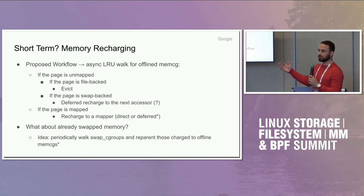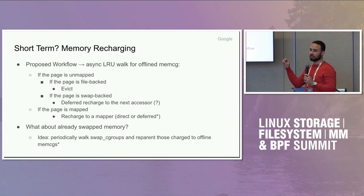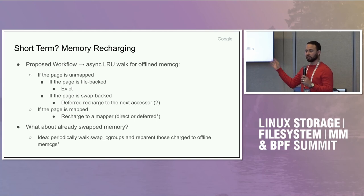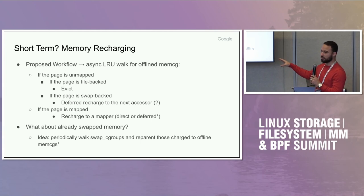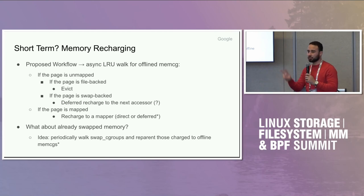There's also the problem that if a cgroup dies and it had some memory already swapped, those swap pages will keep references to the offline memcg indefinitely until they're swapped back in, and they will be recharged at that time. This is a tangential problem but also related — it also causes zombie memcgs. But this can be addressed separately by just having an offline worker that will asynchronously loop through those and recharge them separately. So this is the idea of the short-term solution. Any questions before we move on?